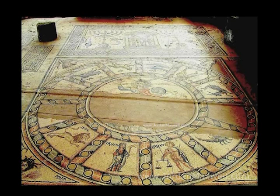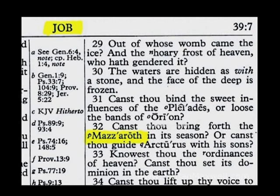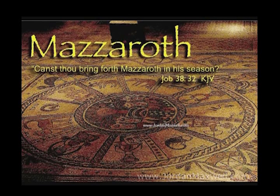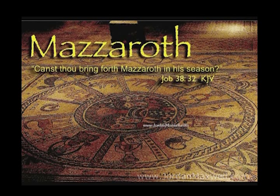We go back to Job 38:32, where God is asking Job, 'Can thou bring forth Mazaroth in his season?' Now we know Mazaroth means the twelve signs of the Zodiac. That's the reason we have as the theme for this lecture: Mazaroth, from Job 38:32, the King James Version of the Bible, where God asks Job, 'Can thou bring forth Mazaroth in his season?' And you will see Mazaroth — the twelve signs of the Zodiac — on the very floor of an old synagogue in Israel.